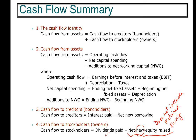Now you know how to compute the cash flow identity and all its individual parts — cash flow to creditors, cash flow to stockholders, operating cash flow, net capital spending, and addition to net working capital — allowing you to compute cash flow from assets using either equation, and the answer should always be the same. In the next video, we'll go over an example using these formulas. Before we go, I strongly encourage you to write down these formulas in your formula sheet so you have them handy as we go through the example.